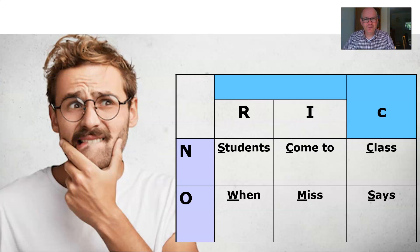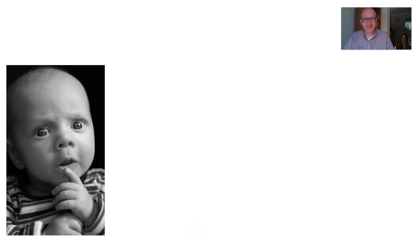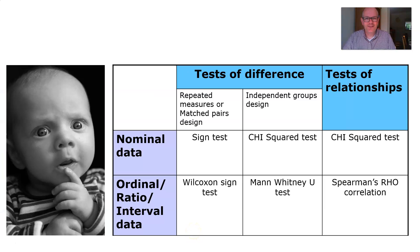So he's got to choose a statistical test for his research. This is a mnemonic that you need to learn in order to identify which test to use in the exam. It says: 'Students come to class when this says no Rick.' You might want to try drawing out the table, hiding it, drawing it out again, and then checking to see if you've got it right. The mnemonic will help you out with that.